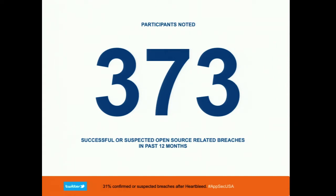It's tough to measure — a lot of people don't notice those exploits, so the number could be considerably higher. The fact that Heartbleed came out right in the middle of the survey probably biased the results. The survey ran April 1st through 30th, and April 7th was the initial Heartbleed announcement. That changed responses: after that announcement, 31% of the people — about 1,500 who answered — said they had suspected open source-related breaches.